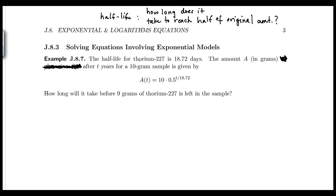The half-life for thorium-227 is 18.72 days. The amount A in grams after T years for a 10-gram sample is given by A(T) equals 10 times 0.5 to the T divided by 18.72.